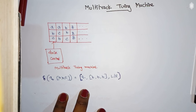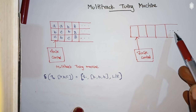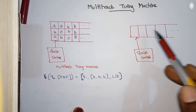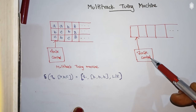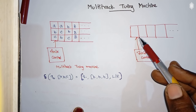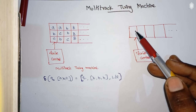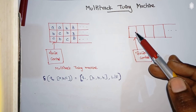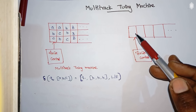So in general, we usually have a single track Turing machine like this. We have a single tape, single track. Each cell is capable of storing one input at a time. And usually we have a finite control with a single read head that is capable of reading whatever is the content of the tape at a time. And based on that, it may take a transition.